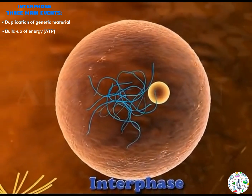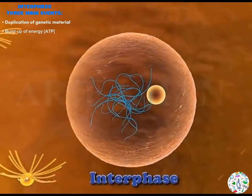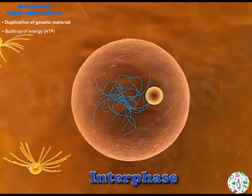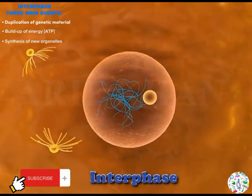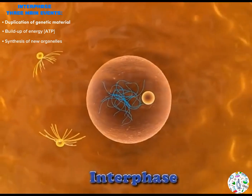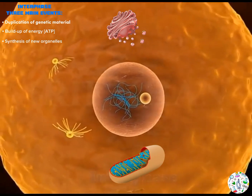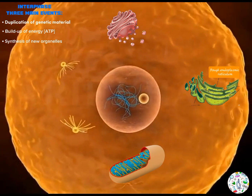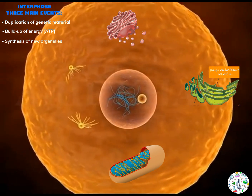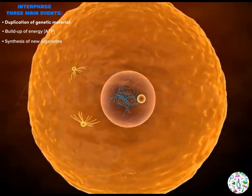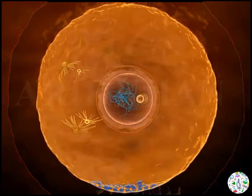The second activity in interphase is build-up of energy — a lot of energy in the form of ATP is accumulated, which will be used to power the process of cell division. The third activity is synthesis of new organelles — new organelles are manufactured, such as Golgi apparatus, centrioles, mitochondria, and ribosomes. This is because you need to have enough organelles for both daughter cells at the end of mitosis.